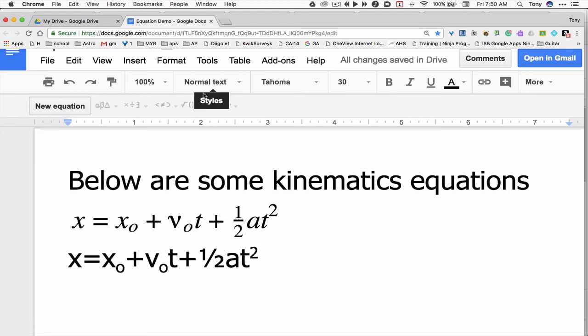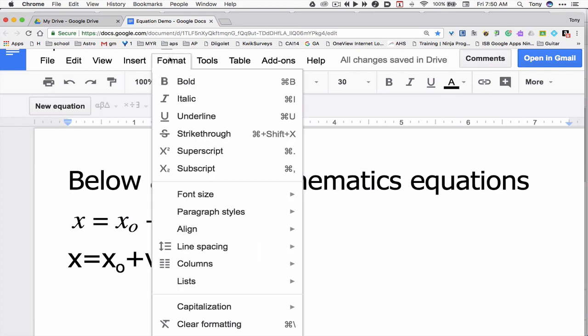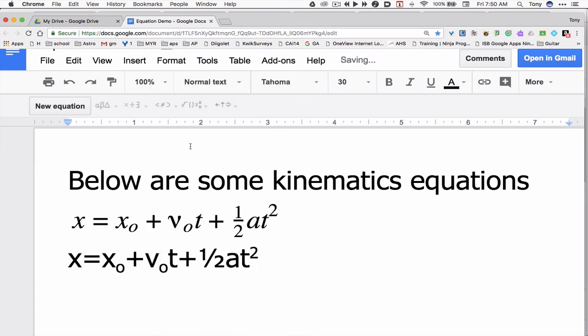Look what happens if I don't turn it off. Everything goes above the baseline. So that's why you got to turn these superscripts and subscripts off to put all the text back on the baseline. So format superscript. Now I'm back on the baseline.